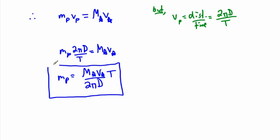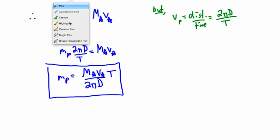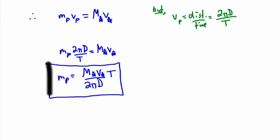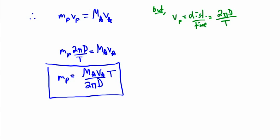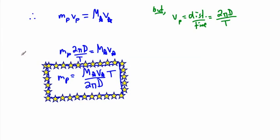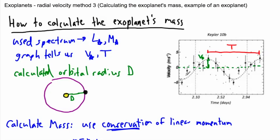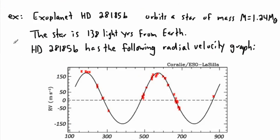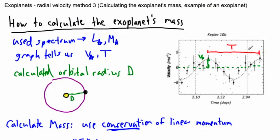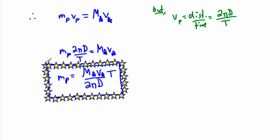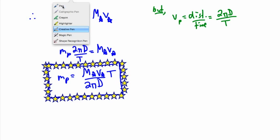So we can calculate not only the orbital distance but also the mass of an exoplanet, just by using our basic laws of physics. We got the mass of the star from the spectrum, v star from the radial velocity graph, d was already calculated, and the period comes from the graph again. Let's take a look at a real example.